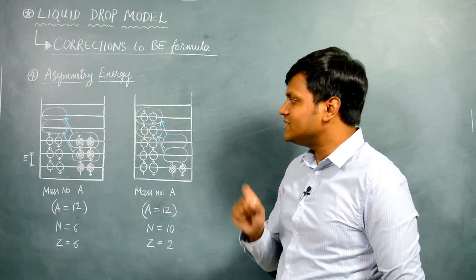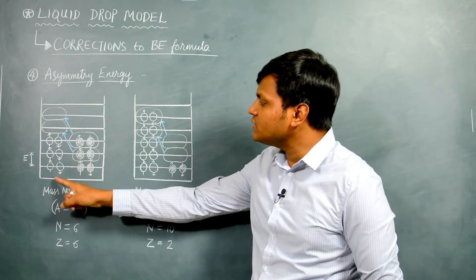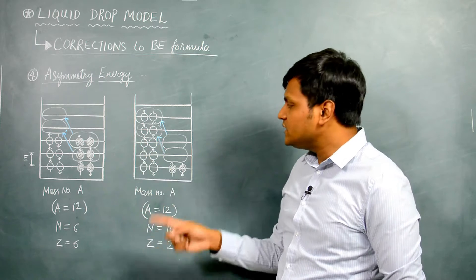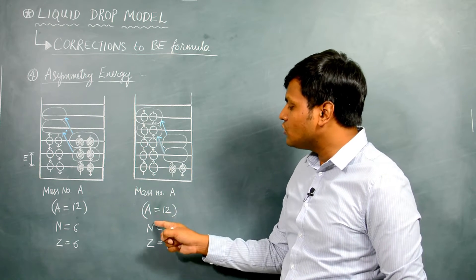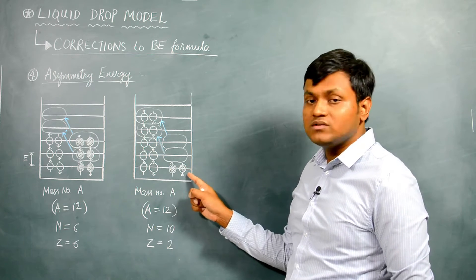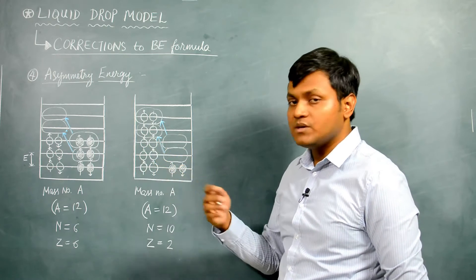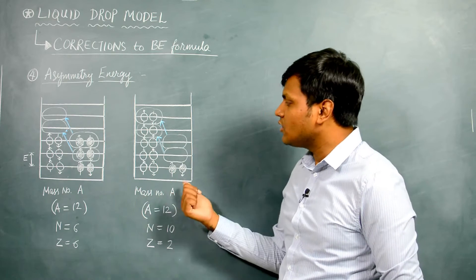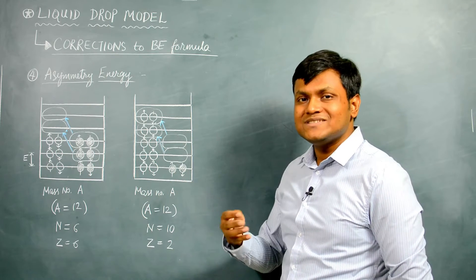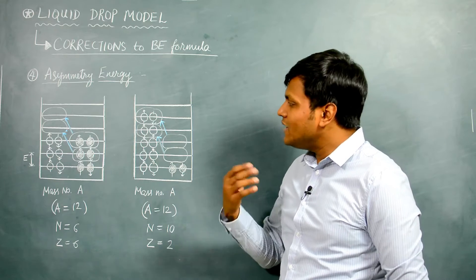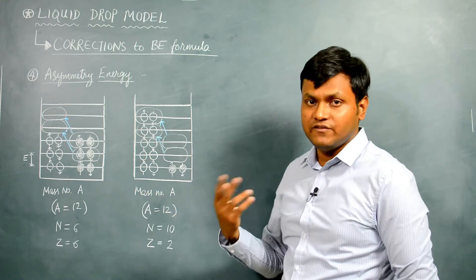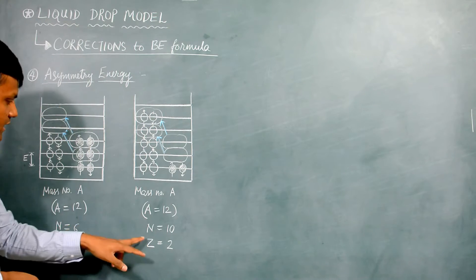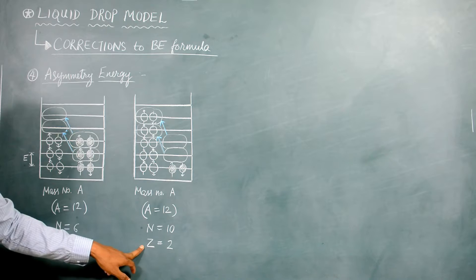There is a very important distinction between the two configurations. In the first configuration, the number of neutrons and the number of protons are six and six respectively — they are equal. In the second configuration, however, the number of neutrons is 10 and the number of protons is two. So in both configurations the mass number is the same, but in one the neutrons equal the protons, while in the other the neutrons far exceed the protons. The difference in the number of neutrons and protons is equal to eight, which is N minus Z.